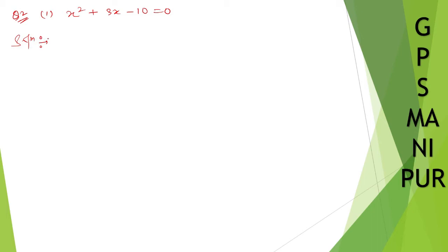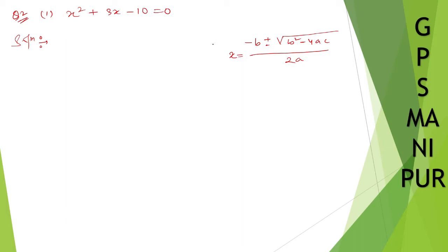The formula for completing the perfect square is x equals minus b plus or minus root over b squared minus 4ac, divided by 2a. This is the formula we are going to use. So let us first find out b squared minus 4ac.